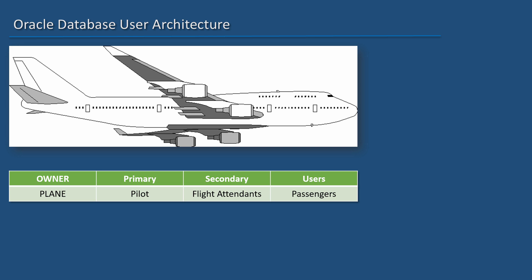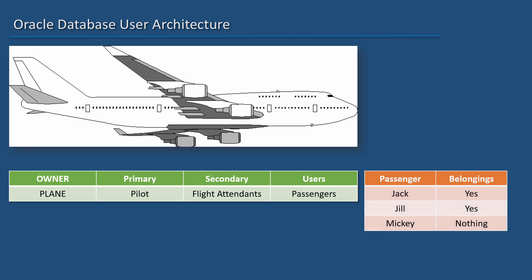And then there are passengers. They bring their own belongings and each have rights over their own belongings. Let's say Jack is a passenger and he brought a laptop and a carry-on baggage — we can refer to those as Jack.laptop and Jack.baggage. Passenger Jill brought a tablet computer and carry-on baggage, referred to as Jill.tablet and Jill.baggage. Passenger Mickey did not bring anything.